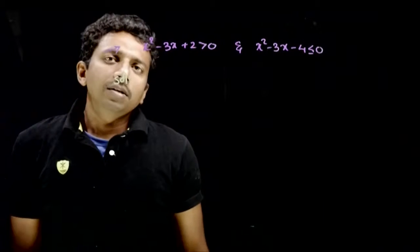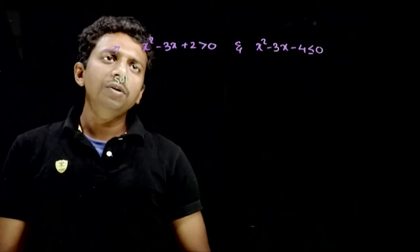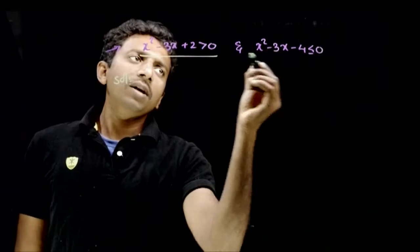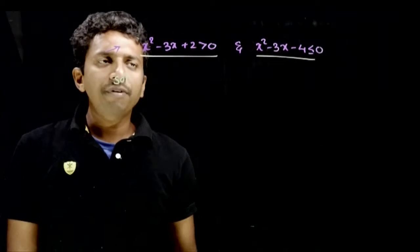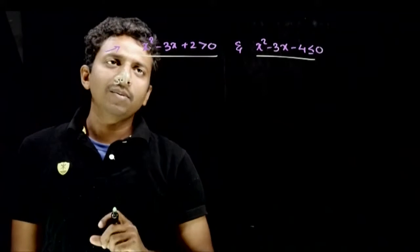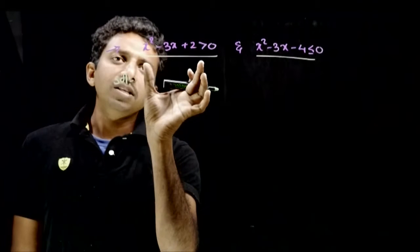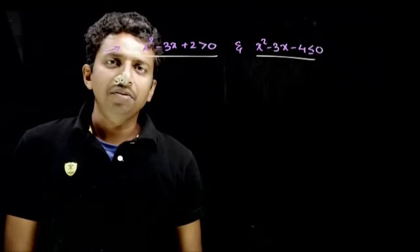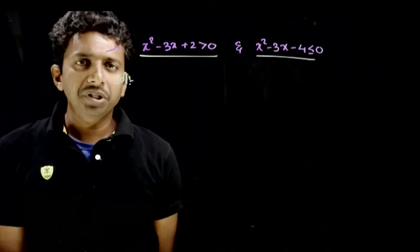Welcome students. Let us look at this question. In this question, you are given two inequalities and you are asked to find the simultaneous solution. So which x values make this expression greater than zero and this expression less than zero? This is a basic question.